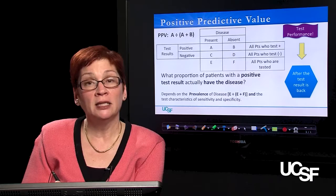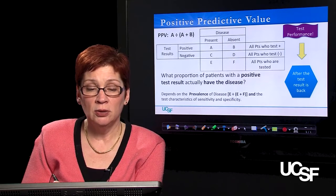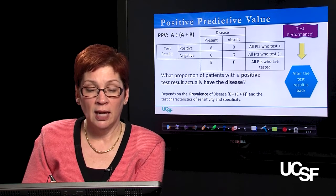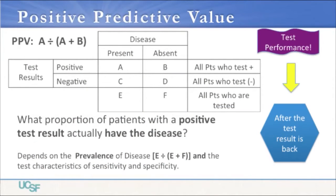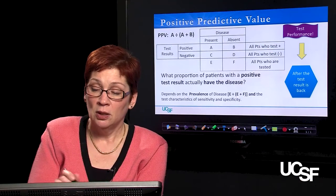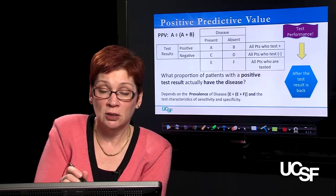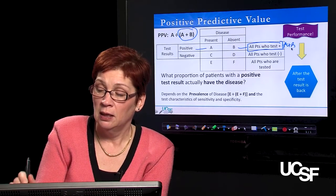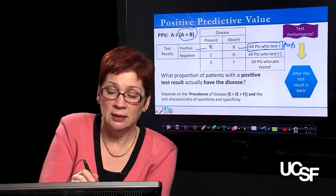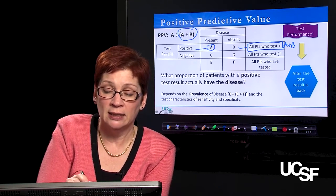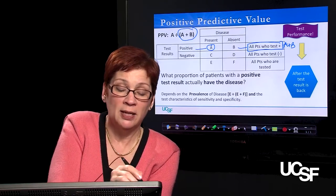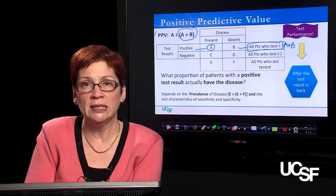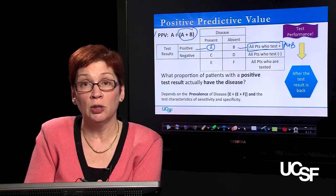To get at what a positive test means for my patient, we need to use the statistic positive predictive value, which answers: what proportion of patients with a positive test result actually have the disease? All patients who test positive is A plus B as the denominator, and the proportion of those who actually have the disease is A over A plus B. That's the positive predictive value — the most useful information to us as we begin testing patients and comparing to our clinical pretest probability.